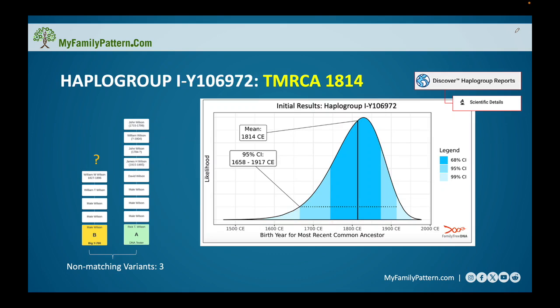What I did was recruit an individual — I am Tester A — who descends from William W. Wilson, a direct male descendant. I invited them to take the Big Y700 DNA test. When the results came back, it said our time to most recent common ancestor was born around 1814. This didn't quite fit right for me based on what I knew. I've done descendancy research on everybody going back from John Wilson, born about 1715, and I couldn't figure out how this individual fit in.